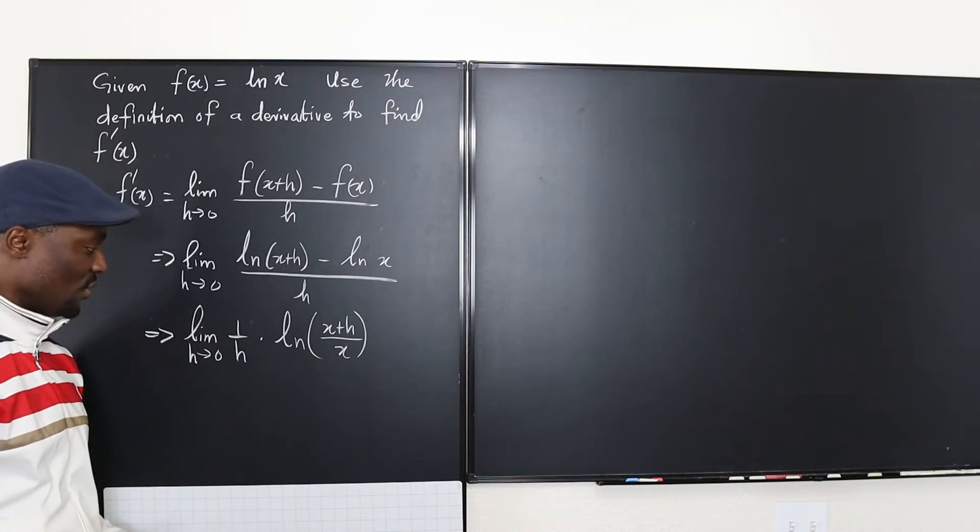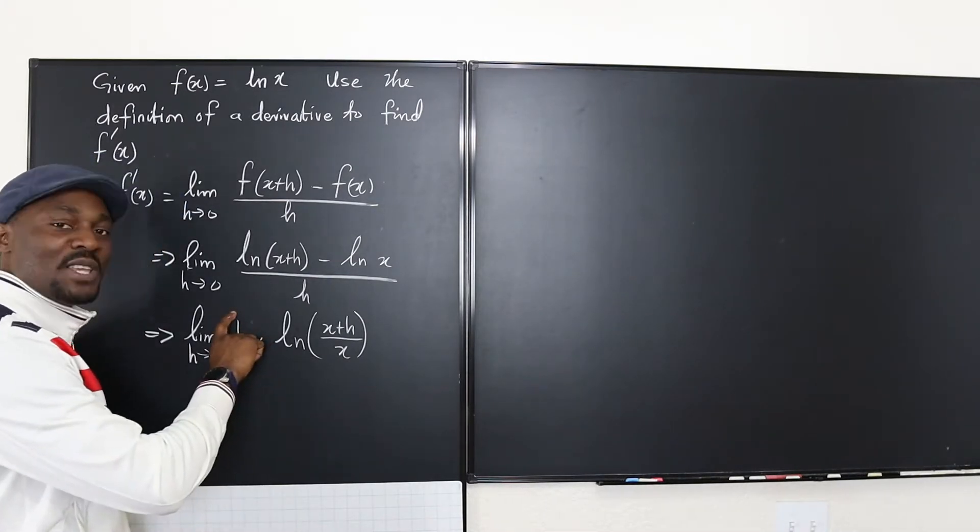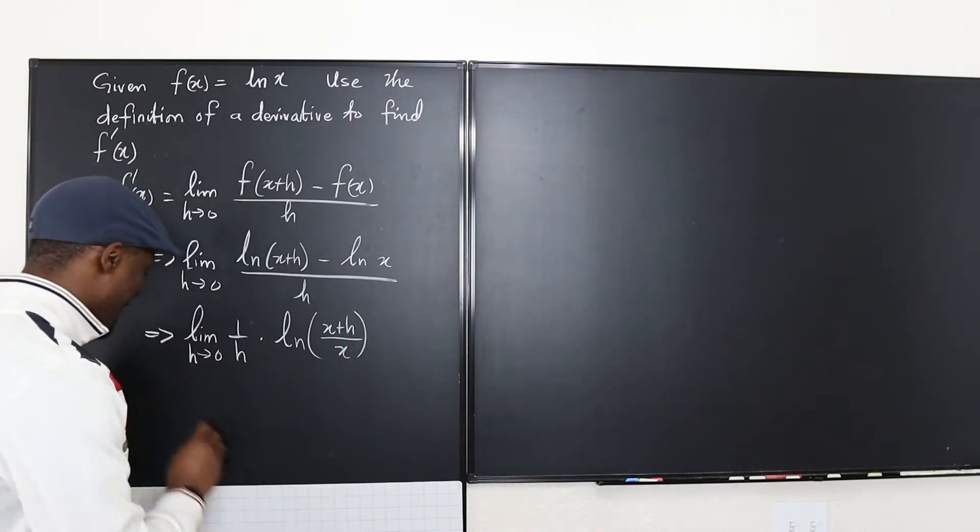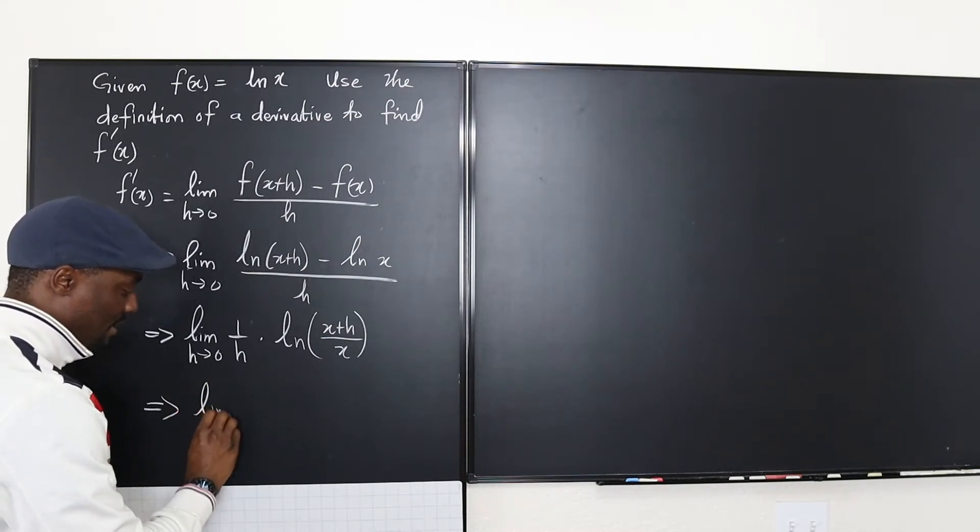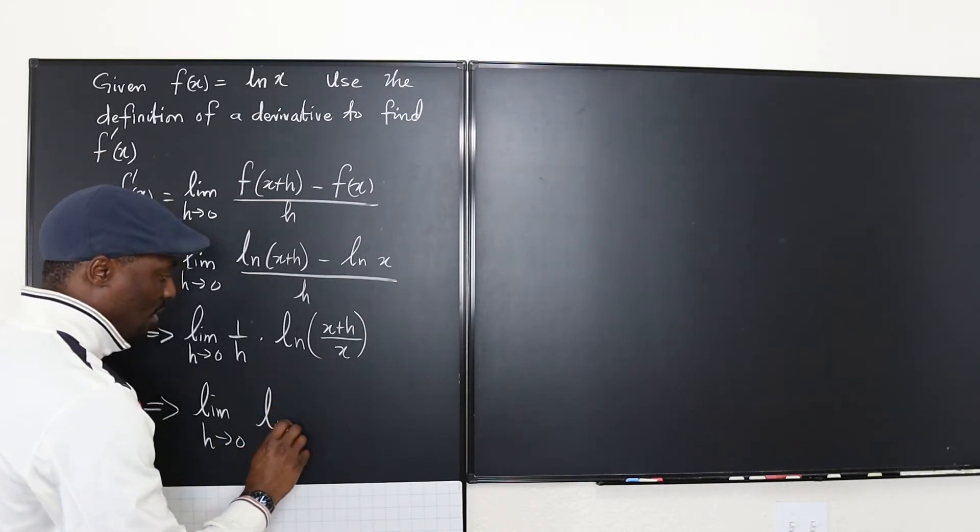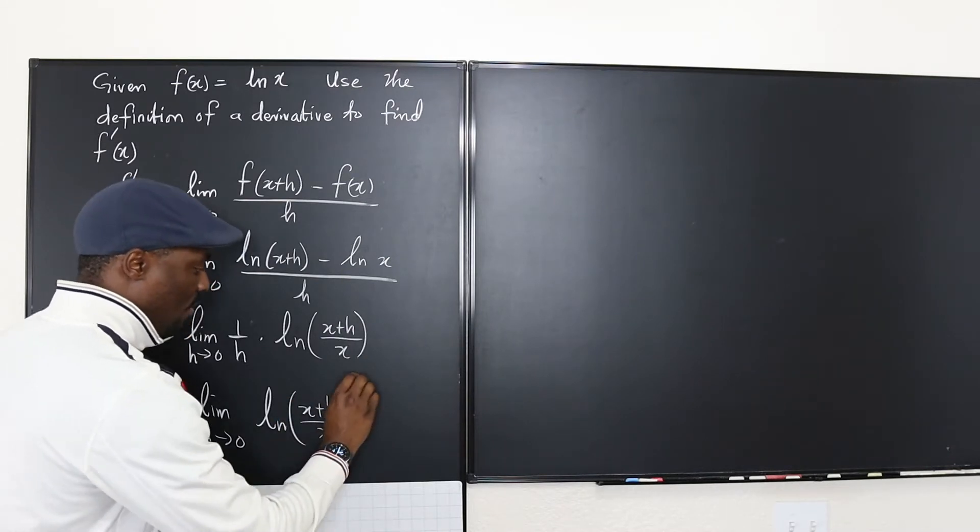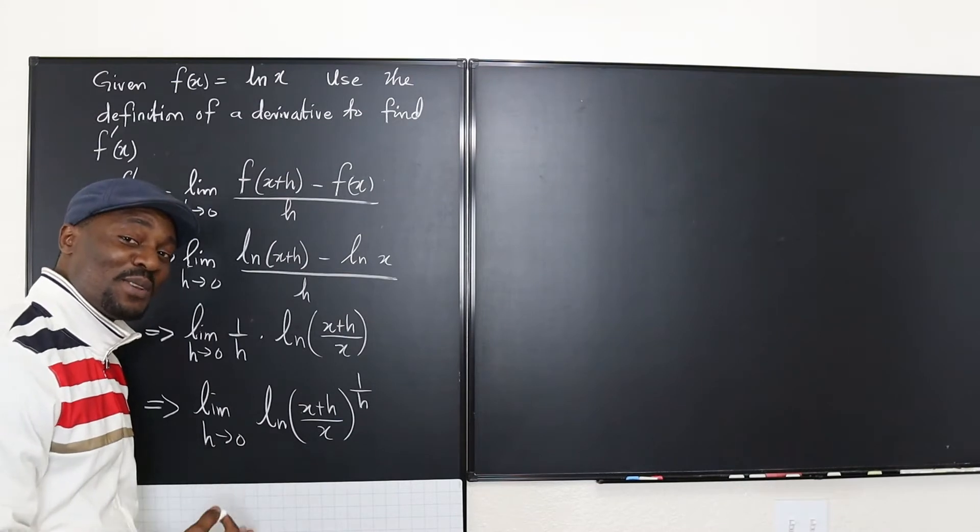So what can I do? Well we also know the property of natural log that when you have a number here you can actually take this number up here as an exponent of the argument. So we can rewrite this as the limit as h goes to zero of the natural log of x plus h over x to the one over h. Now this looks really beautiful.